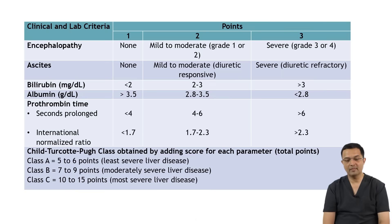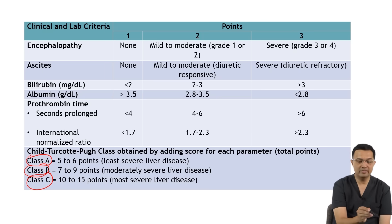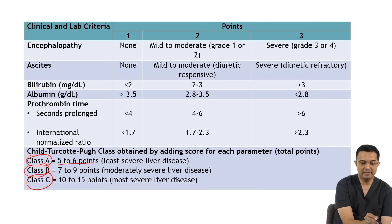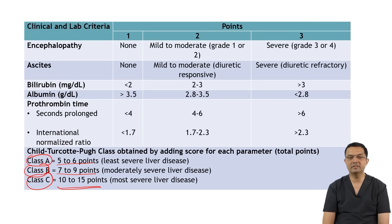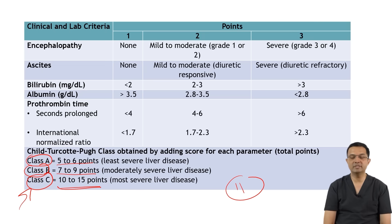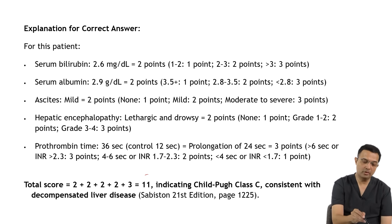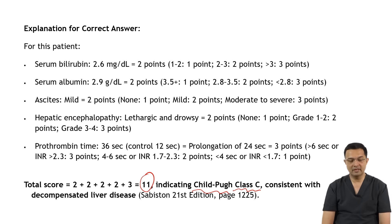Based on the CTP score, you can classify as Class A, Class B, and Class C. If the total points are between 5 to 6, it is Class A; if between 7 to 9, it is Class B; and if between 10 to 15, it is Class C. Our patient's score is 11, so he is Class C — CTP Class C, consistent with decompensated chronic liver disease.